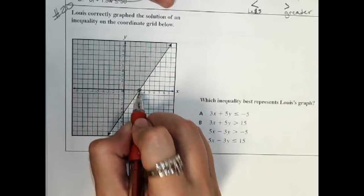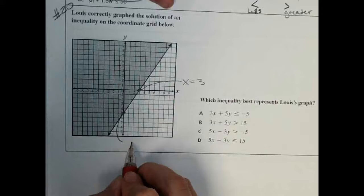This goes through x equals 3 and y equals negative 5.